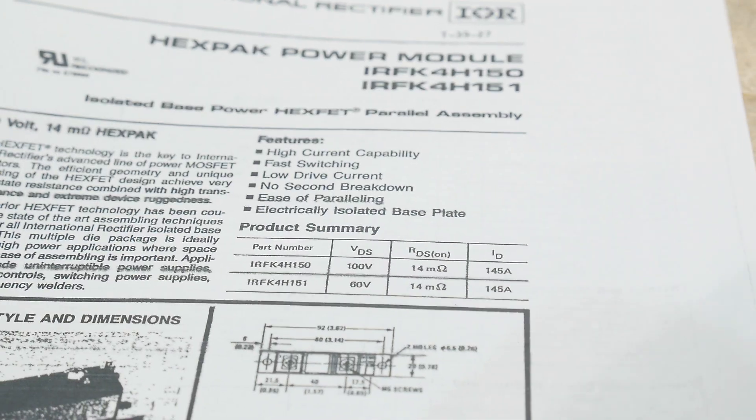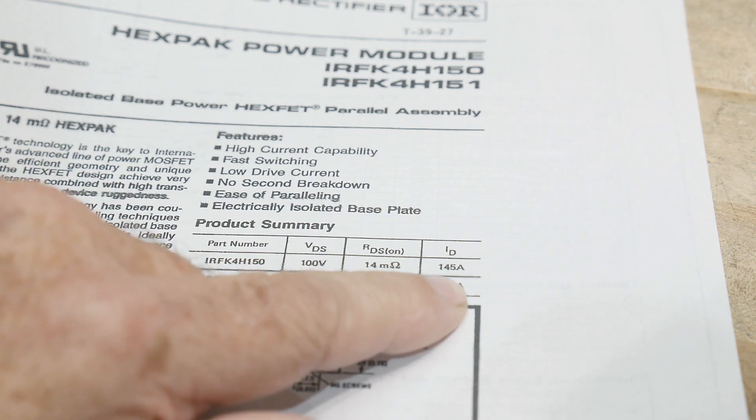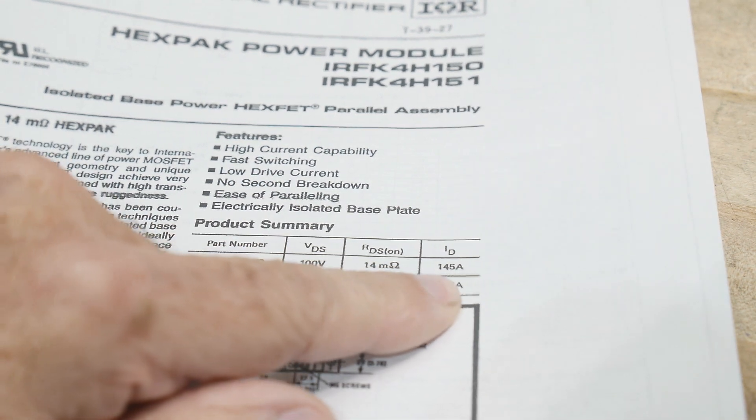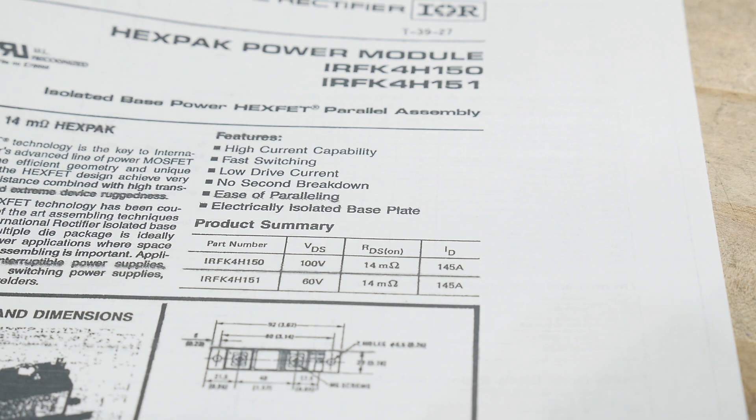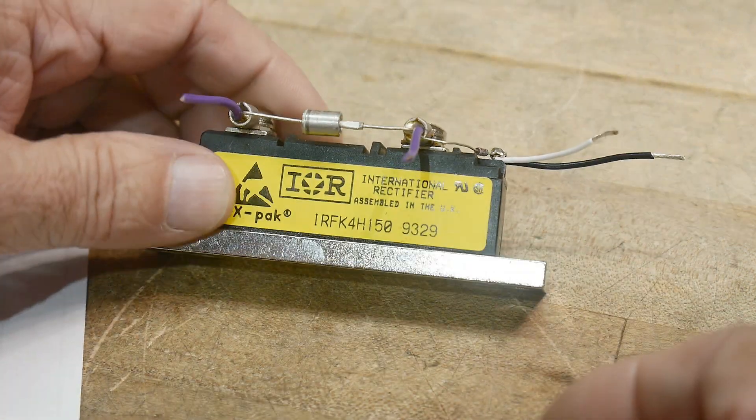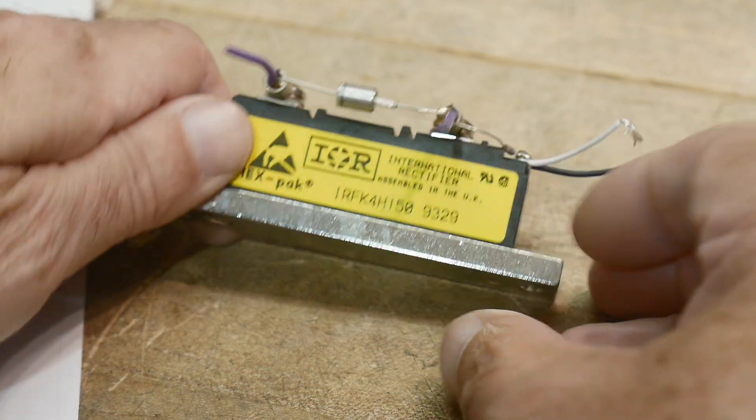And the power of this particular device is 145 amps. Yeah, it's the biggest FET I've ever owned. 145 amps at 100 volts. Oh, man. And this is what it looks like. It's a bruiser. It is big.